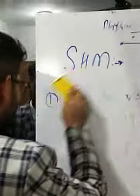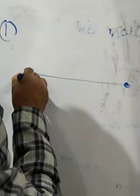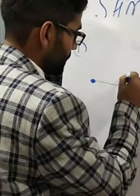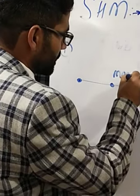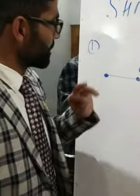There is a very important point here. Consider this fixed point — the mean position — and two extreme points on either side. As I told you, in SHM, acceleration is always directed towards the fixed point.